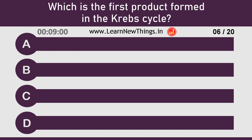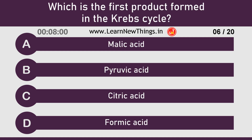Which is the first product formed in the Krebs cycle? Citric acid.